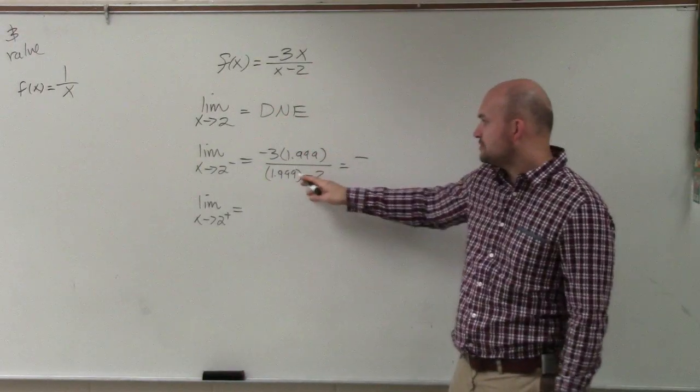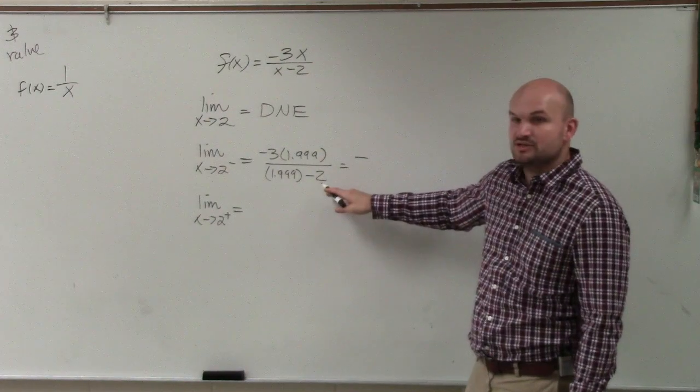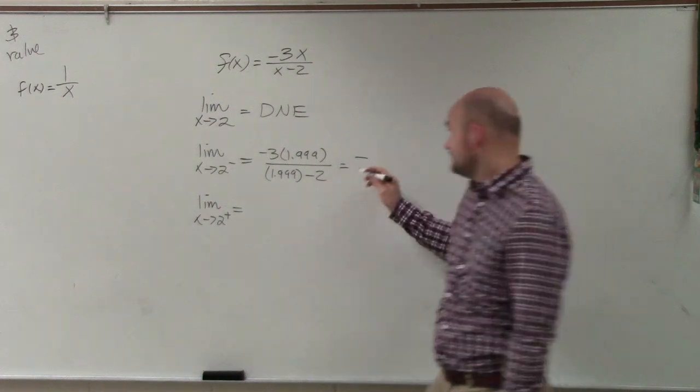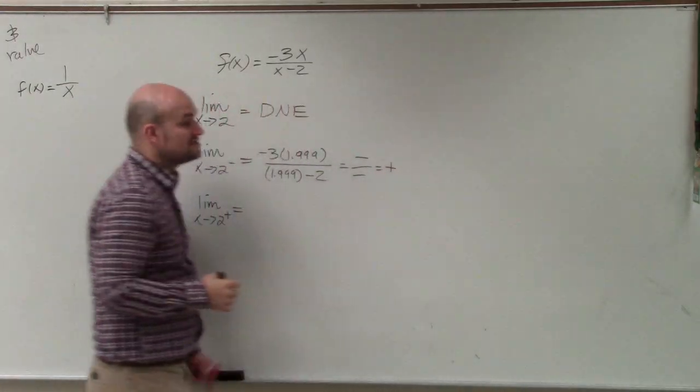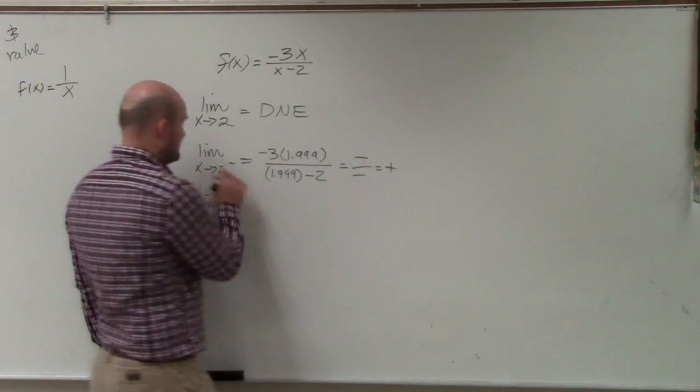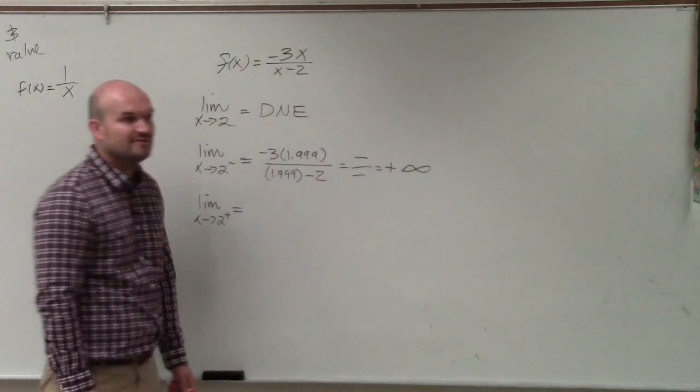So we have a negative times a positive, which is going to give us a negative. We have 1.999 minus 2, which is going to give us another negative number. So we have a negative divided by a negative, which gives us a positive. So therefore, that tells us this graph, the left hand limit, is going to positive infinity.